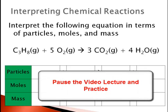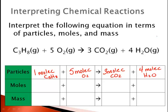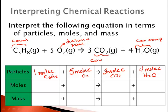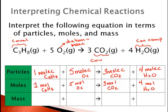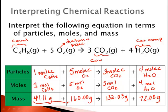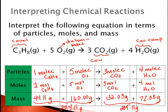Pause the video lecture and fill out this chart concerning the following chemical reaction. They're all molecules because they're all covalently bonded — a covalent compound, a diatomic molecule, and two covalent compounds. The coefficients tell us the number of moles present. The masses show that 160 plus 44.11 equals 204.11 grams of reactants, and the total mass of the products is also 204.11 grams, so the law of conservation of matter holds.